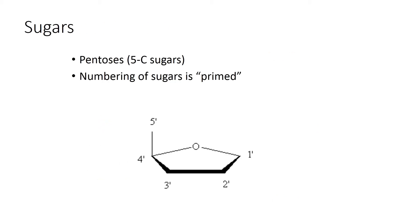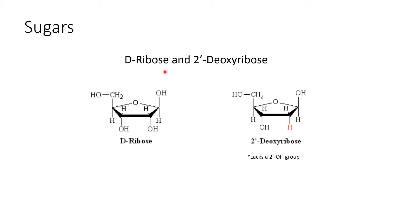Next are the sugars present in nucleotides, known as pentoses — being five-carbon sugars. The sugars are β-D-ribose and 2'-deoxyribose. This is the structure of D-ribose, and if this OH group is absent, as shown here, this is 2'-deoxyribose, which lacks the 2'-OH group.